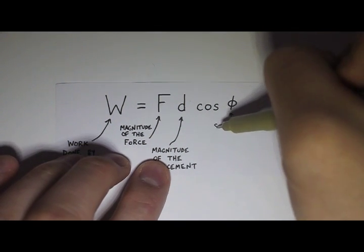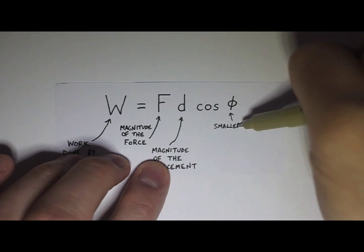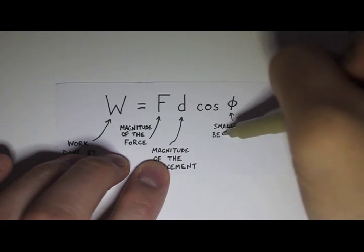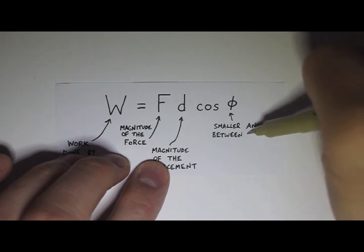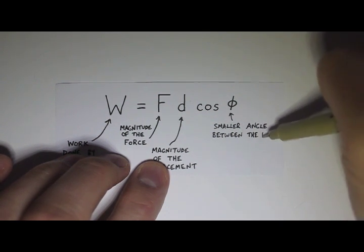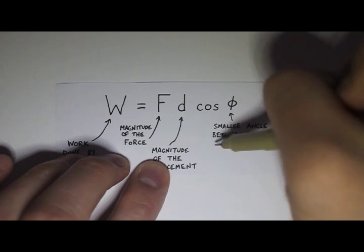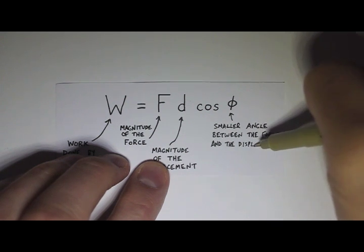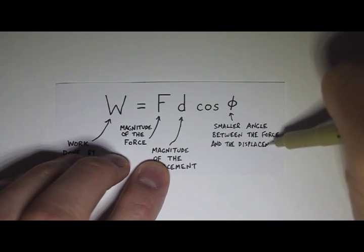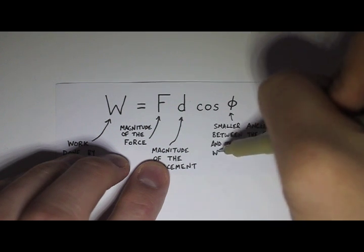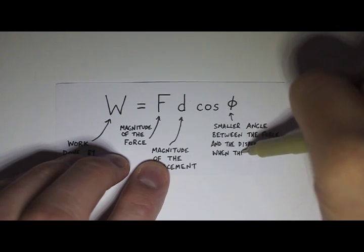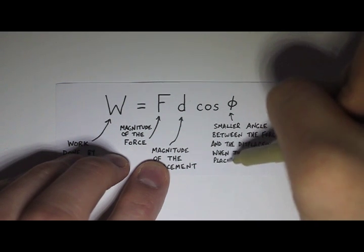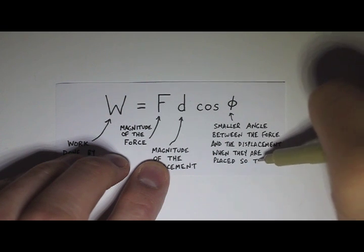So what is phi? Well, let me tell you, that is the smaller angle between the force and the displacement when they are placed so their tails coincide.